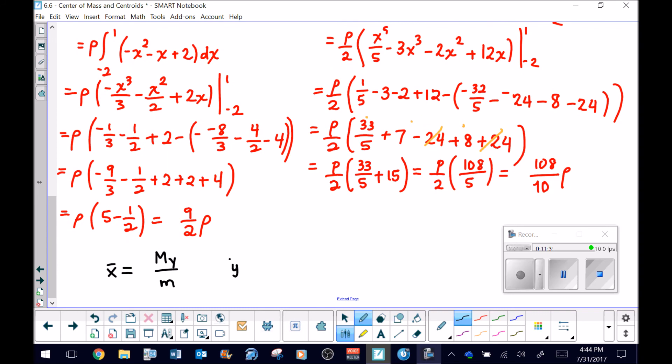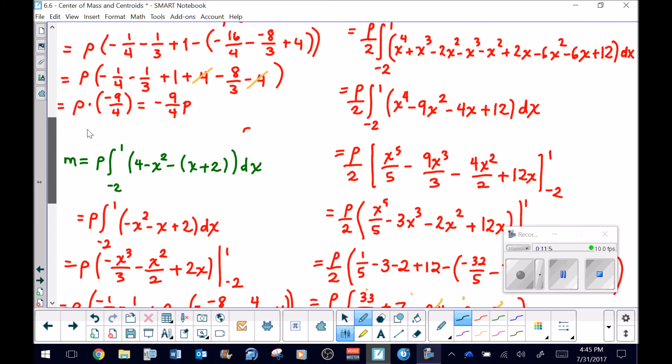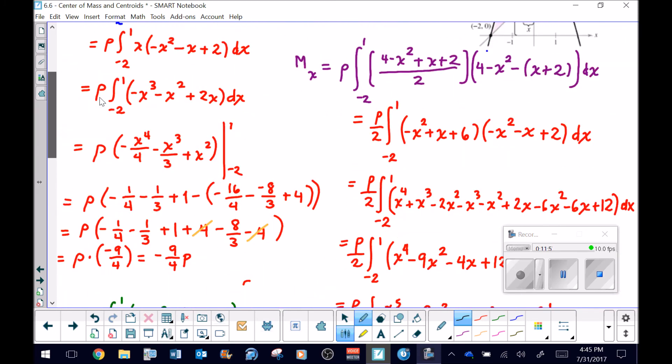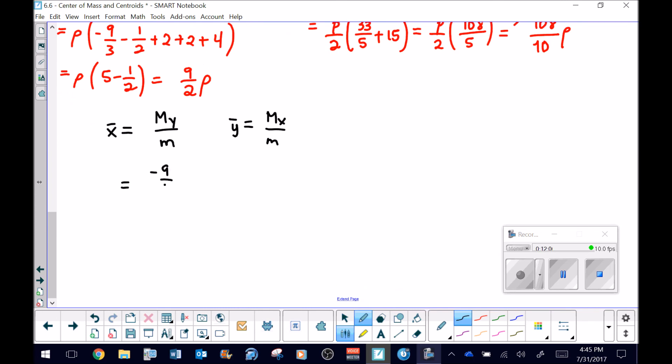In this problem, we're going to have to think back. What was the value of M sub y? It was this negative nine-fourths that we came up with. Negative nine-fourths times ρ. If we divide that by our nine-halves times ρ, we see that the ρs will cancel, and then the negative nine-fourths multiplied by the reciprocal two-ninths will give us a negative one-half x-bar very quickly.